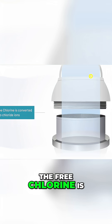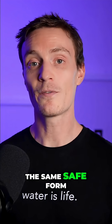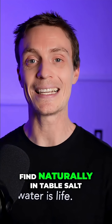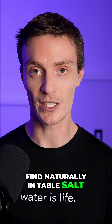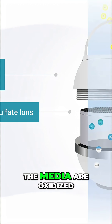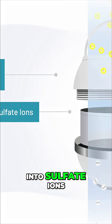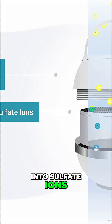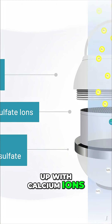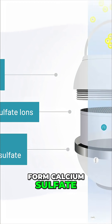The free chlorine is converted into chloride ions, the same safe form of chlorine that you find naturally in table salt. At the same time, the sulfite ions in the media are oxidized into sulfate ions. These sulfates then pair up with calcium ions from the media to form calcium sulfate.